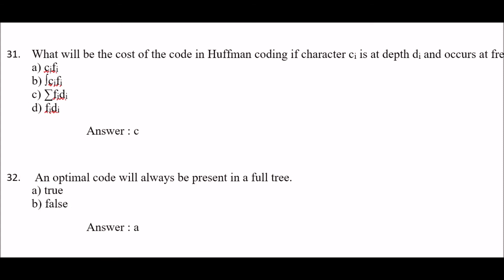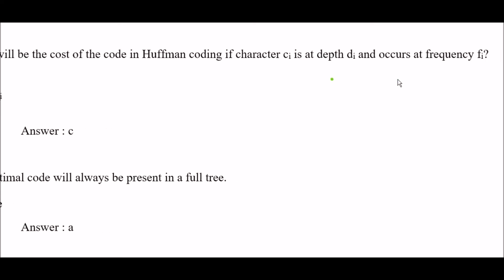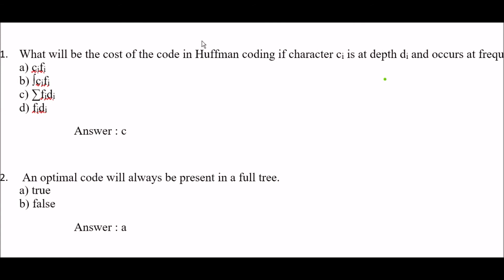Question 31: what will be the cost of the code in Huffman coding if character Ci is at depth Di and occurs at frequency Fi? Option A: Ci × Fi, option B: integral of Ci × Fi, option C: summation of Fi × Di, option D: Fi × Di. The right answer is option C — summation of Fi × Di. This is a very important question for your upcoming examination.